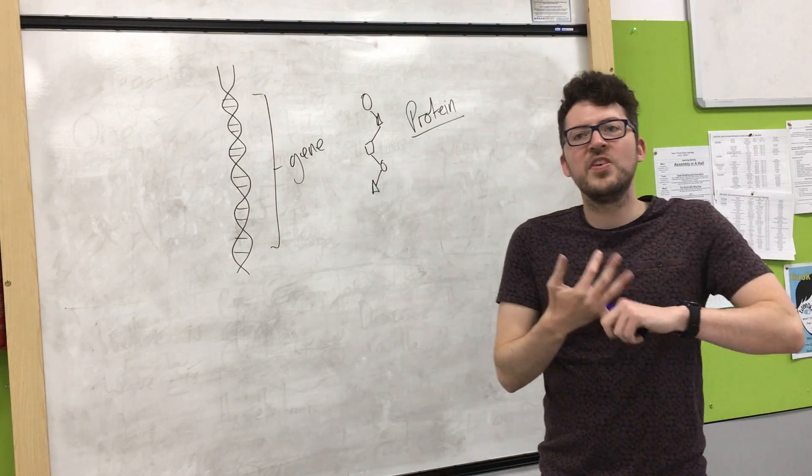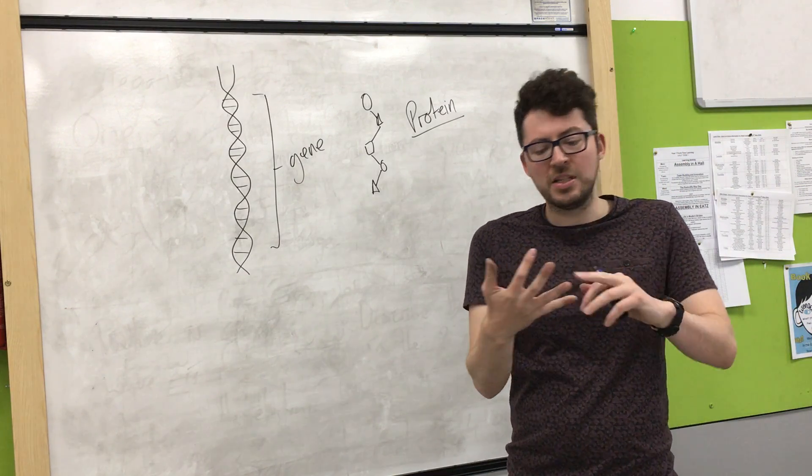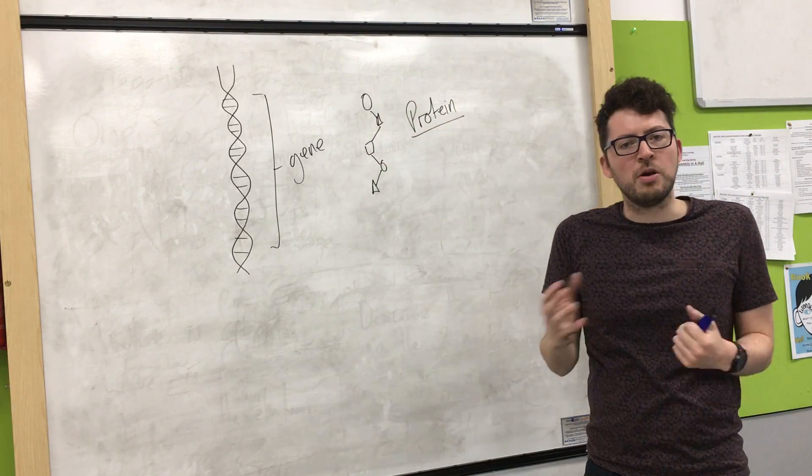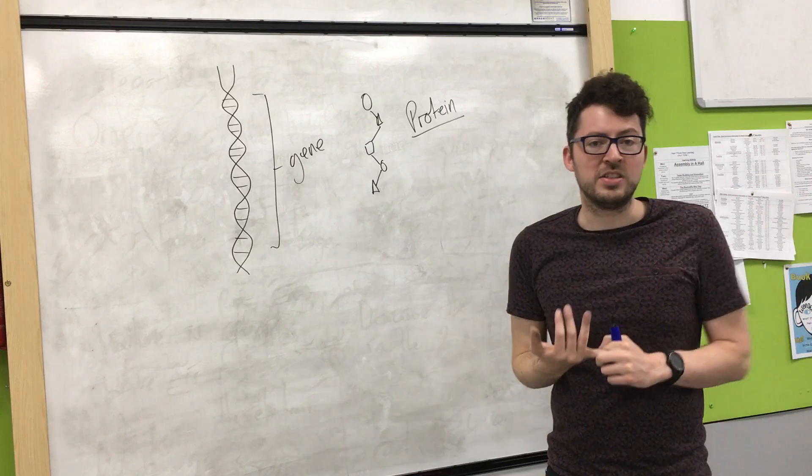So one slightly further step that you need to know from B1 to B2 is that genes code for amino acids, which in turn code for proteins. And that's what will then give us our features.